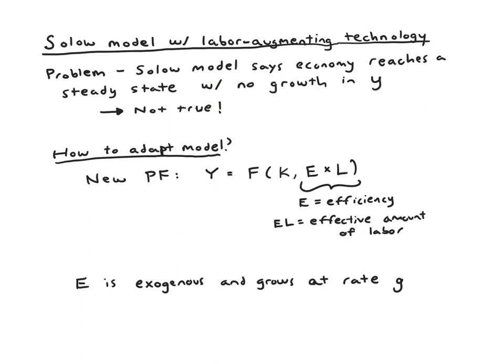So we'll start by noting the problem this tweak is meant to fix. The problem is that in the Solow model we've had so far, it converges to a steady state, and in that steady state, there's no growth in little y, which is output per worker.